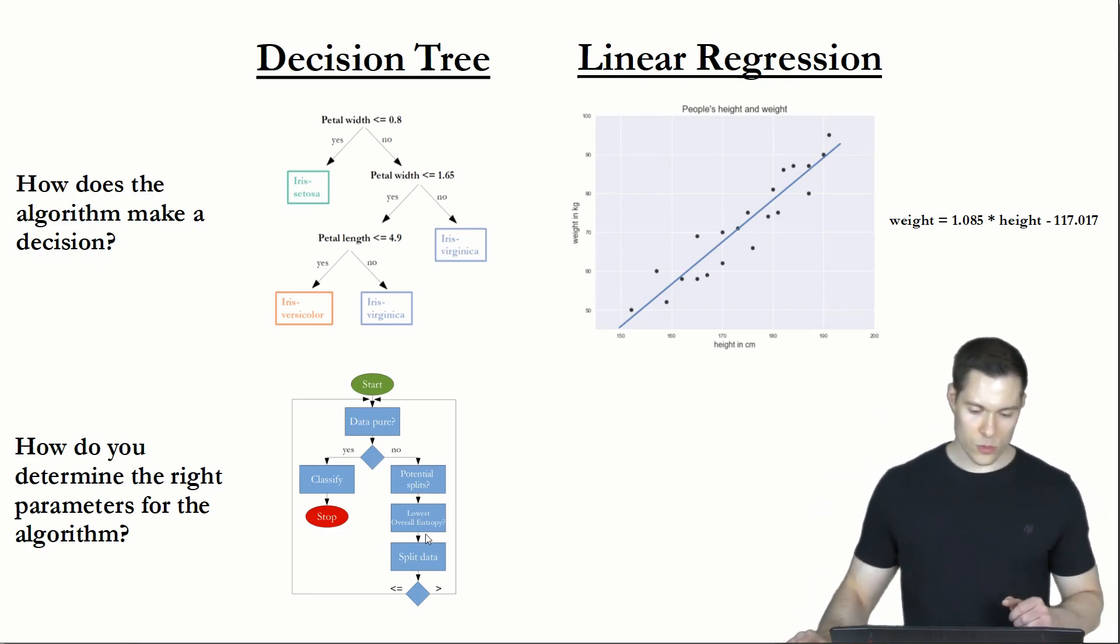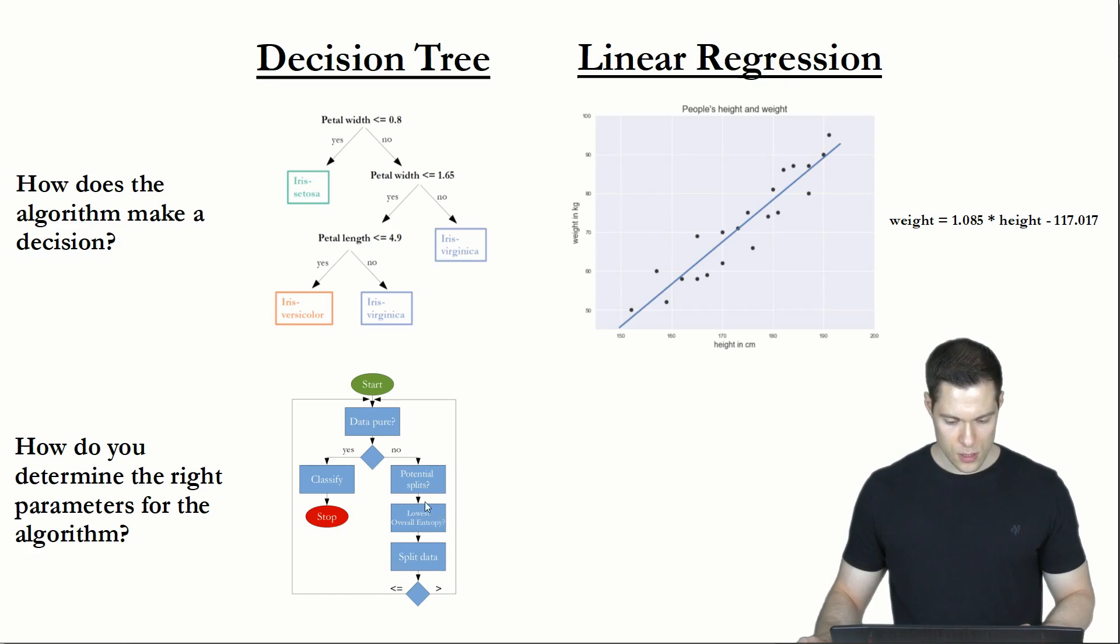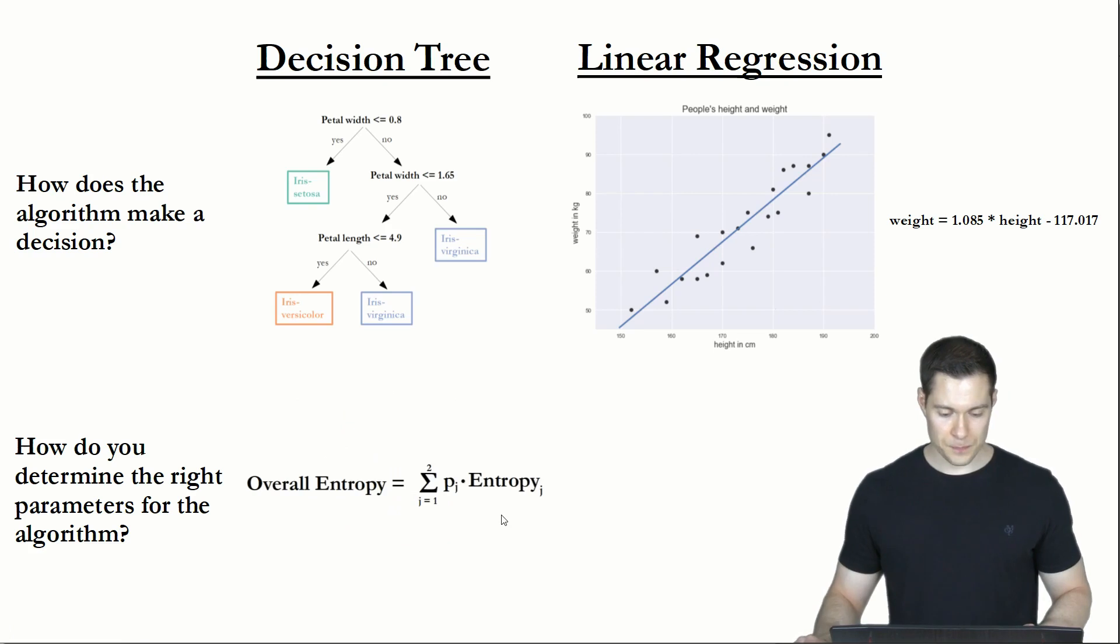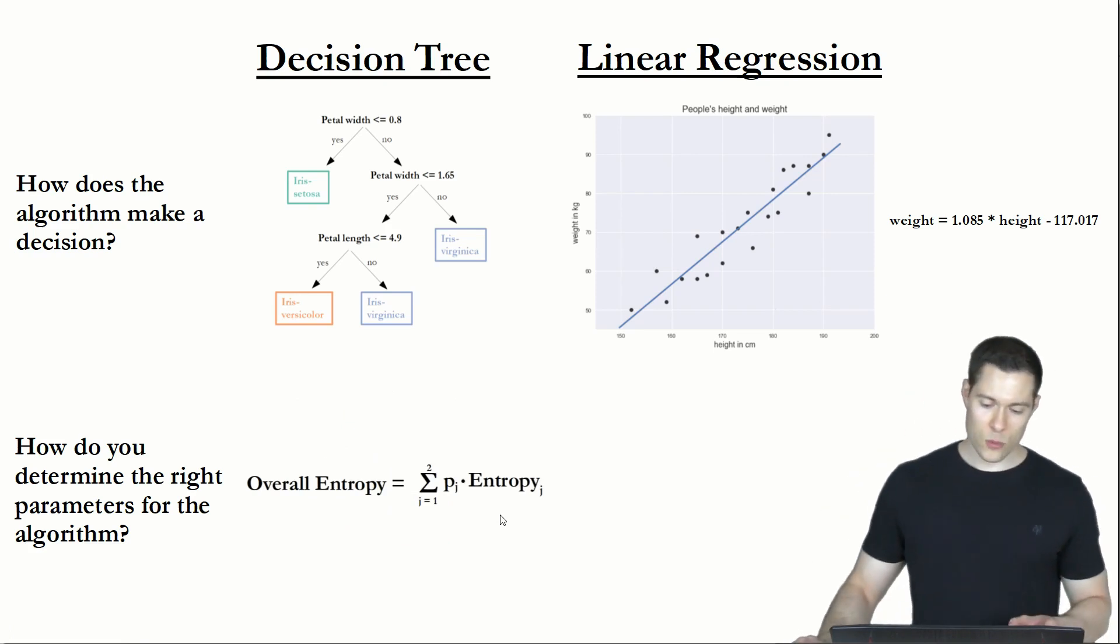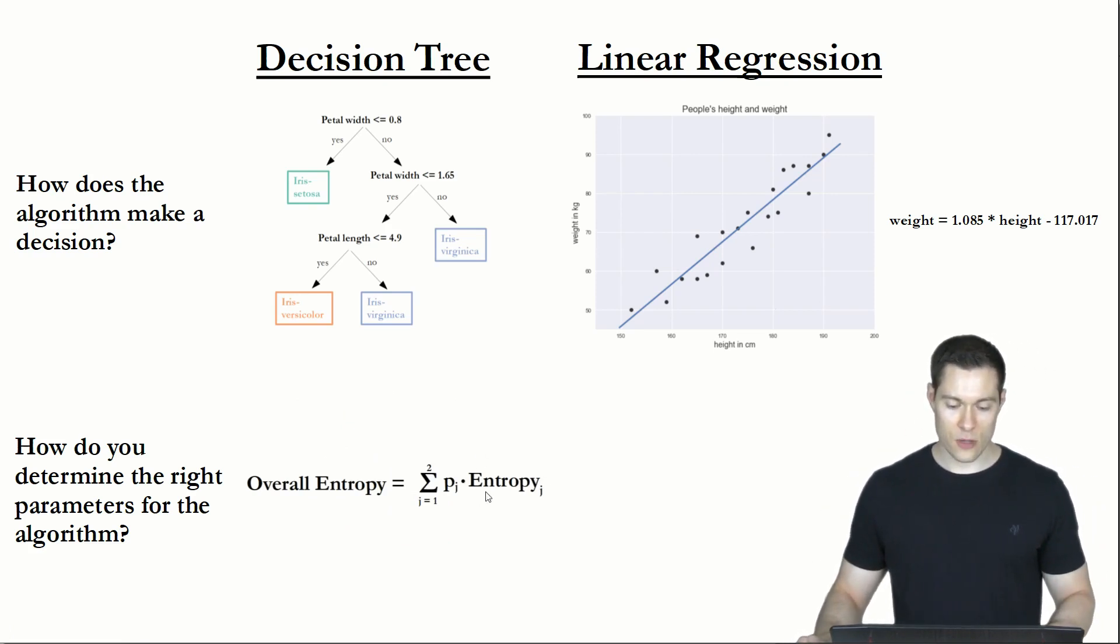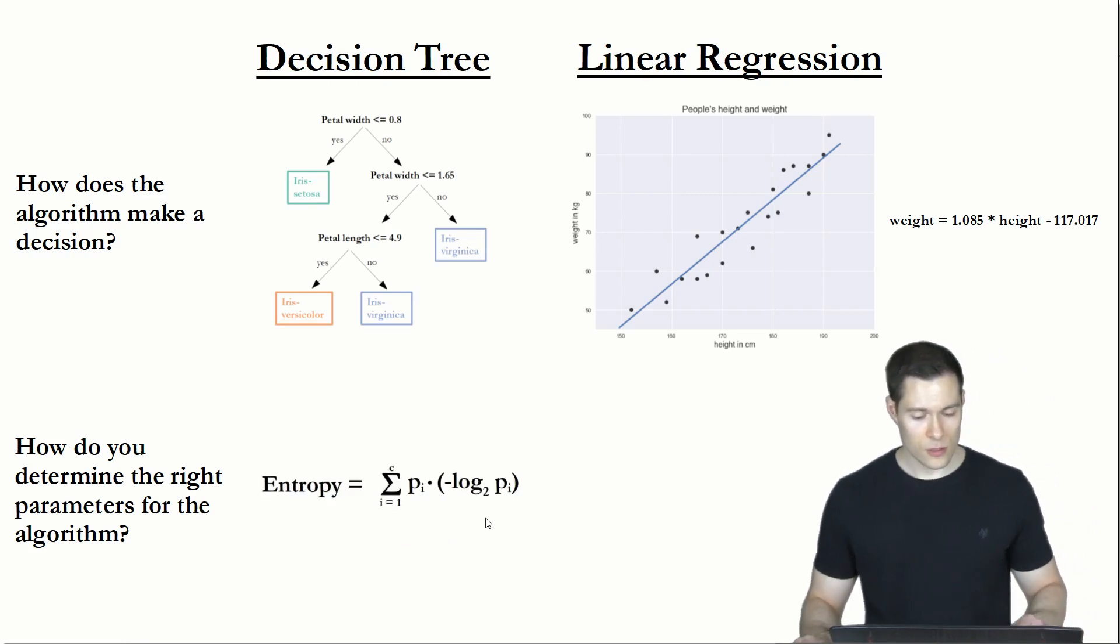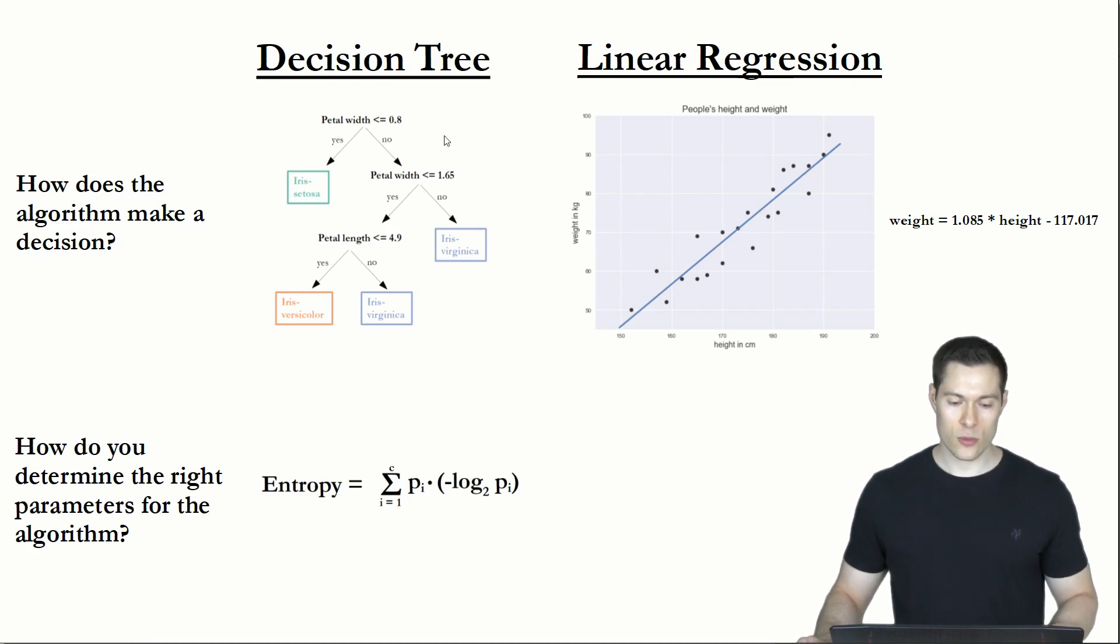But basically the most important element of this algorithm was this step where we determined the question with the lowest overall entropy. And the formula for that looked like this. And here, the most important element was this one, the entropy itself. And its formula in turn looked like this. So at the core, the way we determined those questions or the parameters of the algorithm was by calculating this entropy. So that's how we determine the parameters of the decision tree.